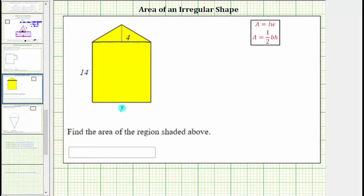Because the area of a rectangle is equal to length times width, and the area of a triangle is equal to one-half base times height, the total area or the area of the pentagon is equal to the area of the rectangle, which is length times width, plus the area of the triangle, which is one-half base times height.